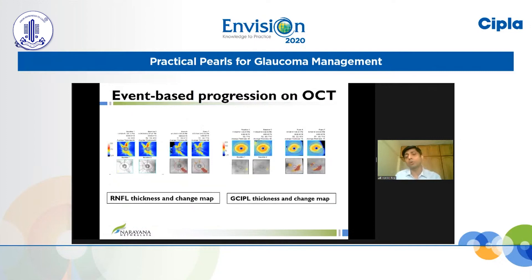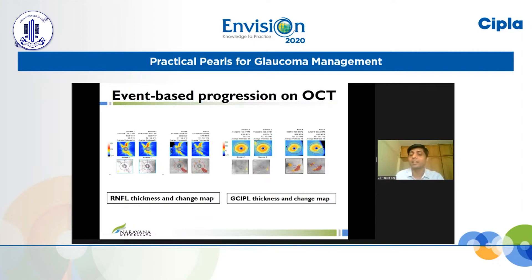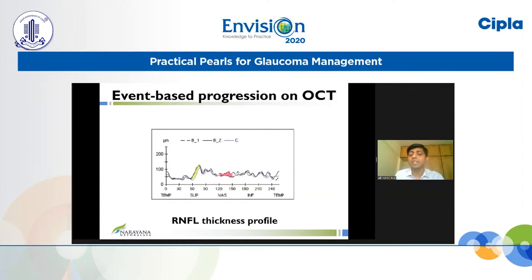Event-based progression analysis on OCT works on similar principles. On the Cirrus OCT, one method is the RNFL thickness change map, where reduction in RNFL thickness at super-pixel levels is analyzed. If a cluster of 20 super-pixels shows a reduction in RNFL thickness greater than the test-retest variability, that's called progression — this applies to both the RNFL and GCC maps. The other event analysis on OCT is the TSNIT profile, where a reduction in RNFL thickness seen in a 20-degree sector is called progression.